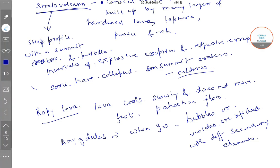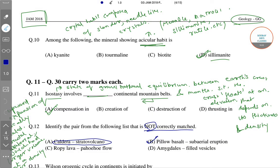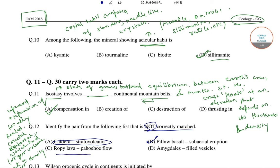So the pair of ropey lava and pahoehoe flow, and the pair of amygdales and filled vesicles, are also correct. Therefore, the correct answer is option number B — pillow basalt and subaerial eruption are not a correct match.